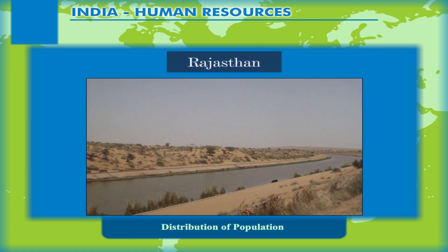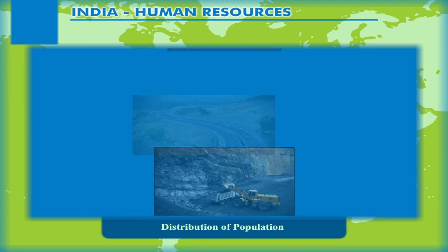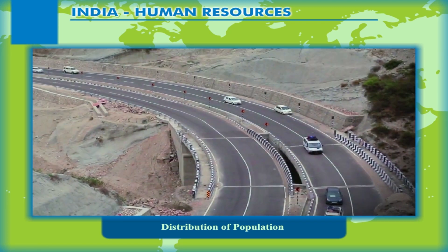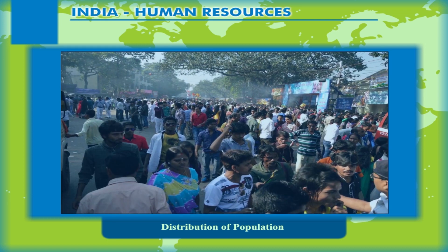However, development of irrigation in Rajasthan, availability of mineral and energy resources in Jharkhand, and development of transport network in the Peninsular states have resulted in moderate to high concentration of population in areas which were previously very thinly populated.